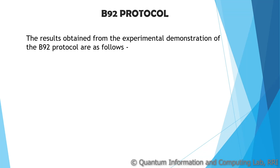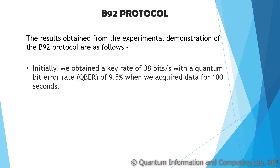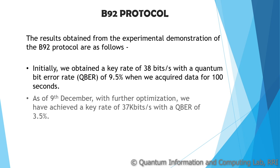After some initial testing, we obtained the experimental results. We acquired data using a time-correlated photon counting module and then post-processed the acquired data. Initially, we achieved a key rate of 38 bits per second and a quantum bit error rate of 9.5%. As of 9th December, with further optimization, we have been able to generate a key between Alice and Bob at the rate of 37 kilobits per second with a quantum bit error rate of 3.5%.